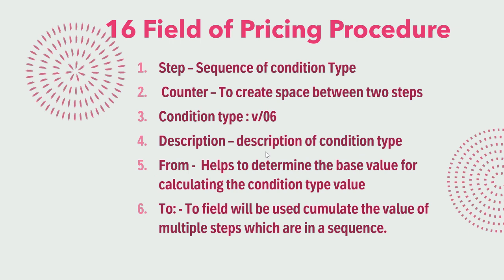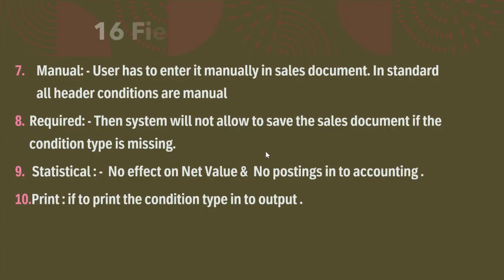The fifth and sixth fields are From and To. From and To determine the base value for calculating a condition type. For example, if we are calculating the net value and we set From 45 to 50, then whatever condition types fall in steps 45 to 50, the calculated value of those condition types will feed into our target condition type.